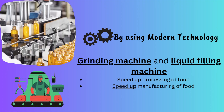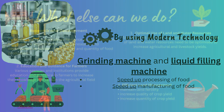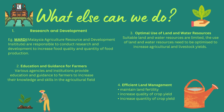Last but not least, we have grinding machines and liquid filling machines to speed up the processing and manufacturing of foods. Aside from all of that, you can perform R&Ds, land management, education for farmers, and a much more optimal use of land and water resources to improve our alternatives.